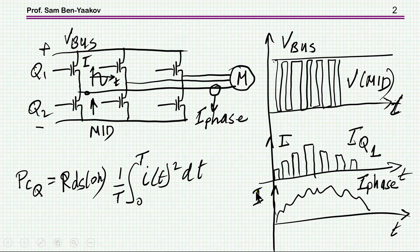Now, if I look at the current through Q1, it's going to be chopped, because the current, this phase current, is passing through Q1 only when it's on. When it's off, it's passing through Q2. And therefore, this is the waveform of Q1.